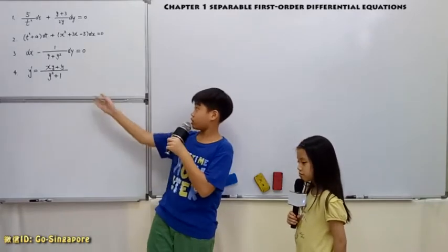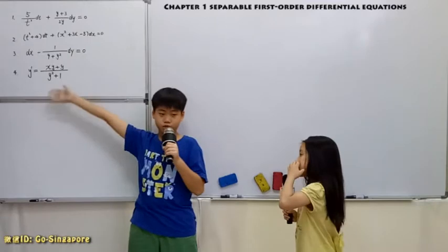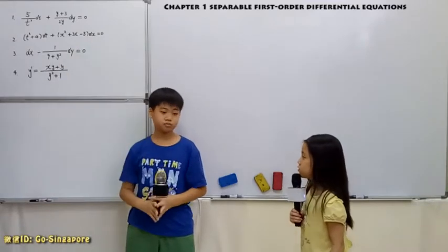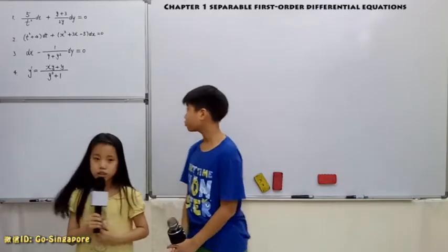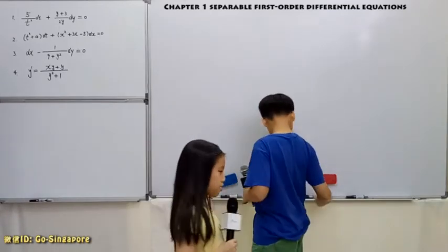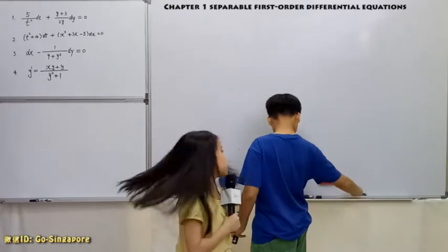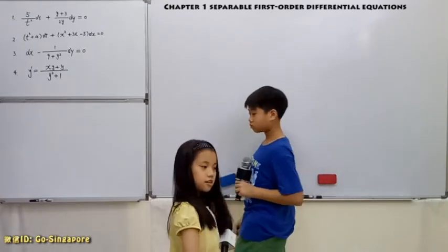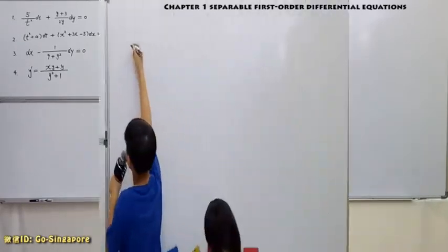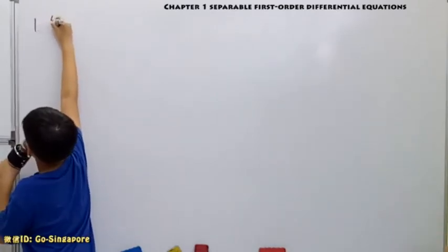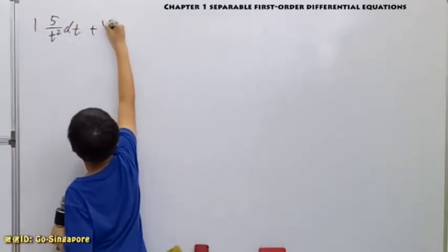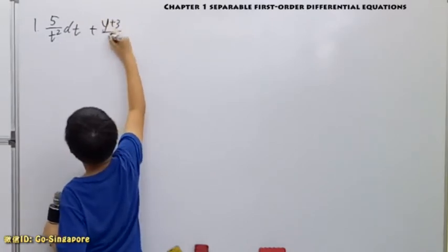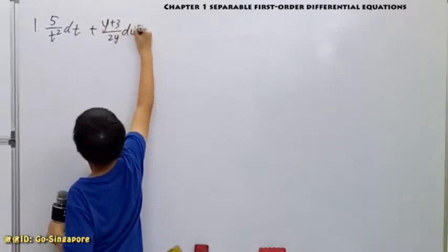For these questions, which questions would you like to solve? I will solve questions 2 and 3. You will solve the first and the last. For this first question, what is it? The question is 5 over t squared dt plus 1 plus 3 over 2y dy equals 0.